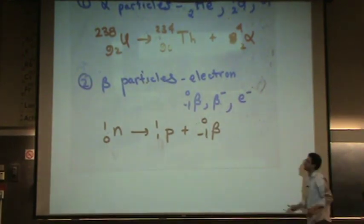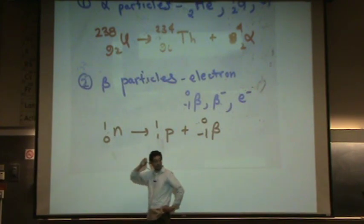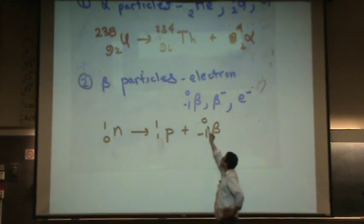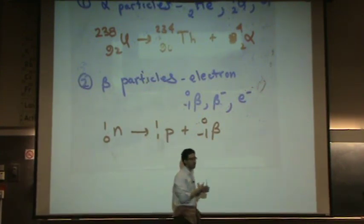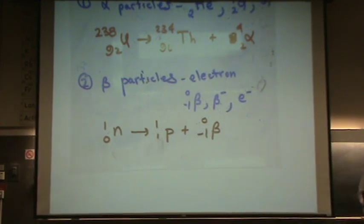Notice how this balances. Minus one plus one equals zero. Again, we're balancing the nuclei. Not the actual entity. Zero plus one equals one. So here, no heavy element here though. Elements can do this. Just an example that's a little smaller.